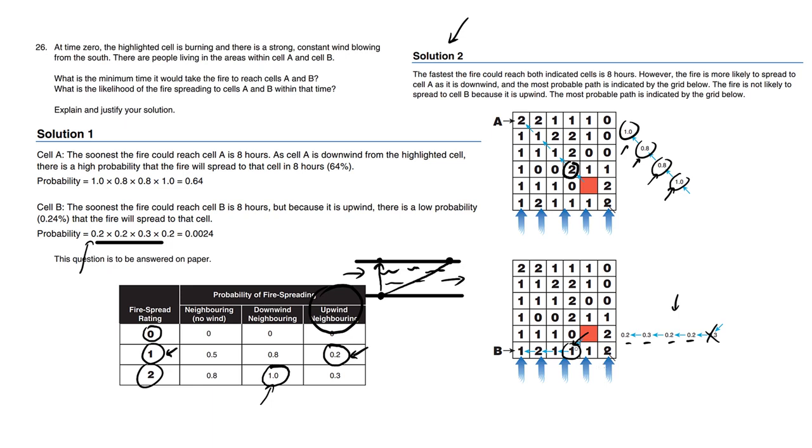However, you can argue that cells catching on fire sideways are not affected by the wind. So as long as you show your work, you may be able to multiply by probabilities not affected by the wind going sideways here.